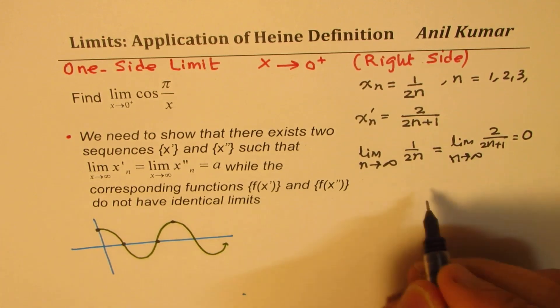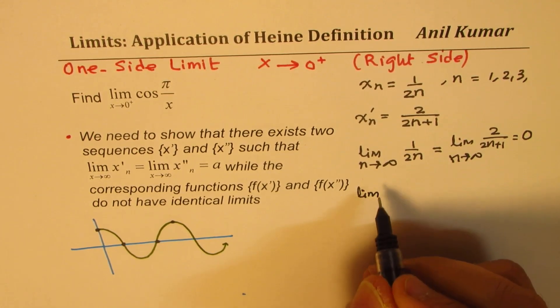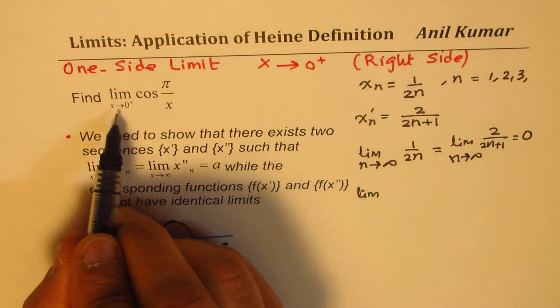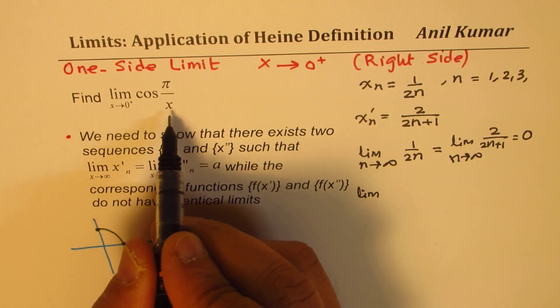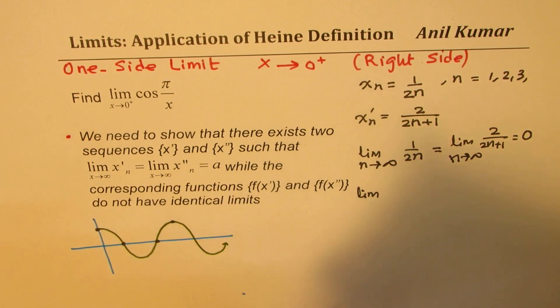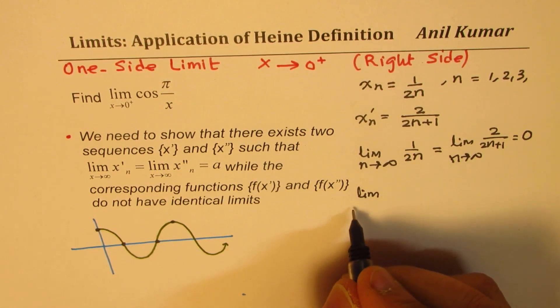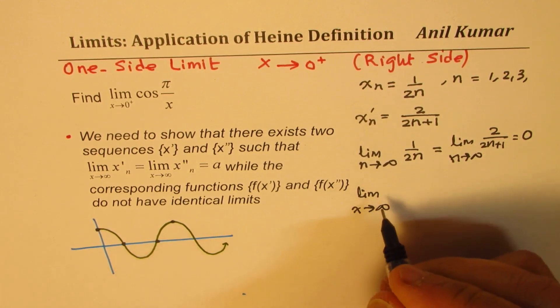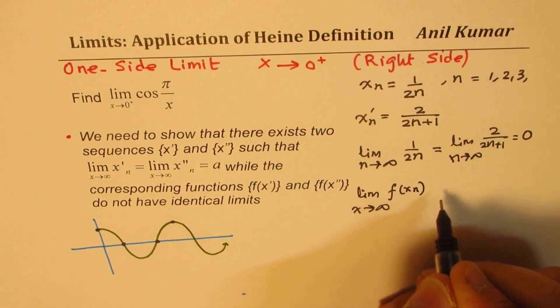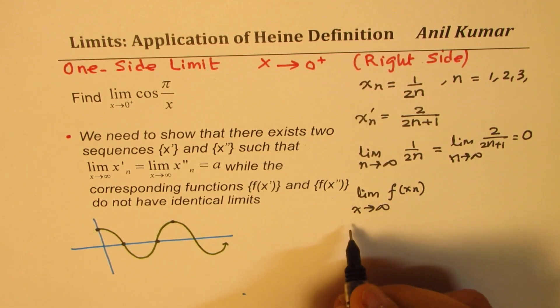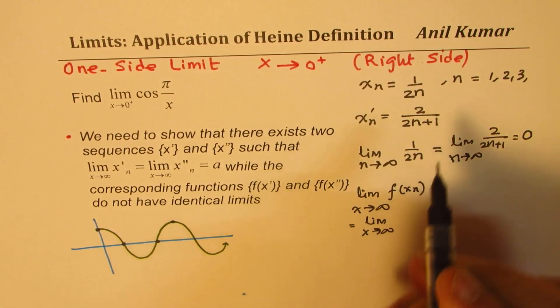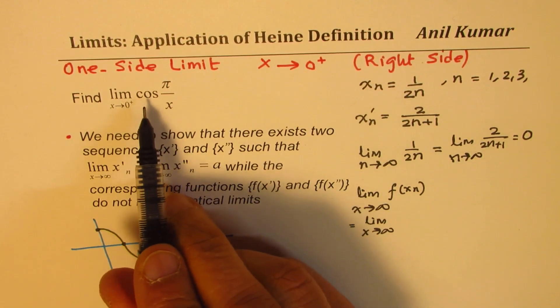Now what we need to figure out is the limit of our function. Since this is approaching to infinity, so if I replace it with something reciprocal I will make it positive. So limit x approaches infinity since it is positive of f of xn. f of xn is basically limit x approaches infinity of cos of, so this is the function.